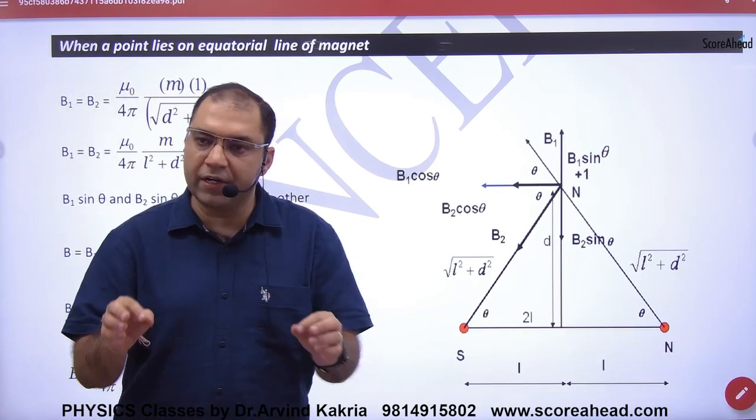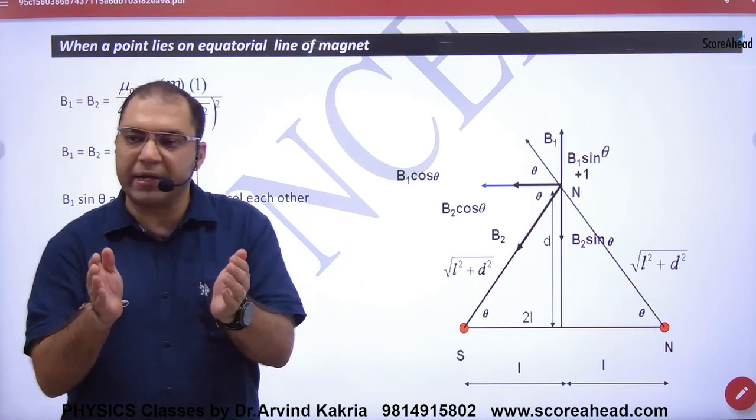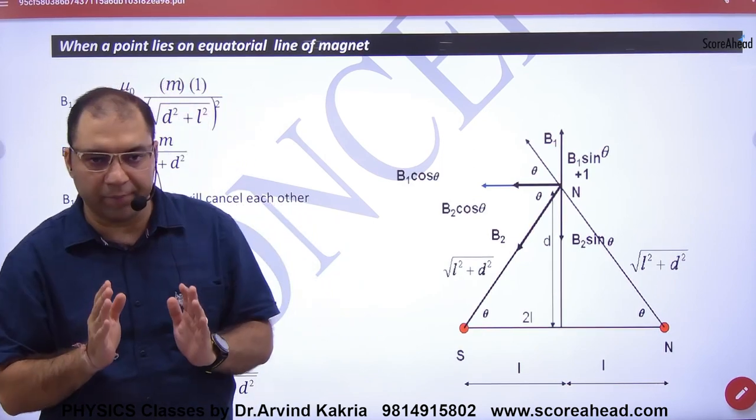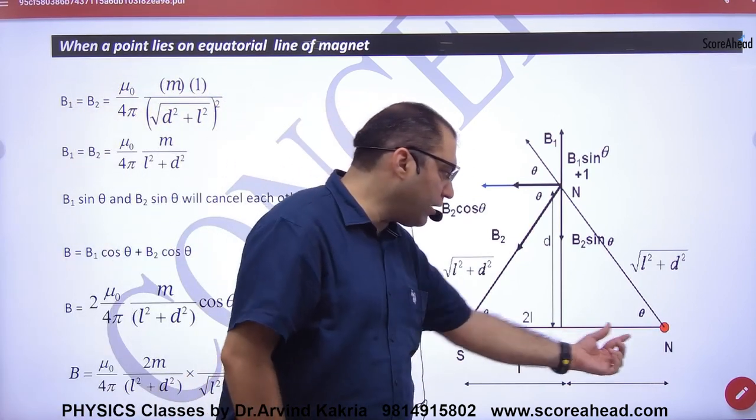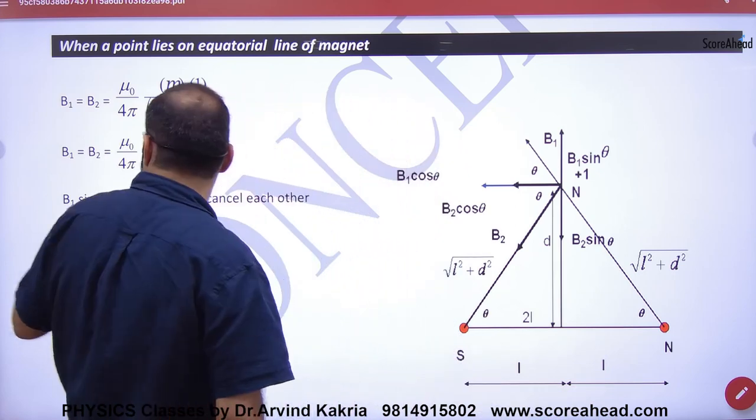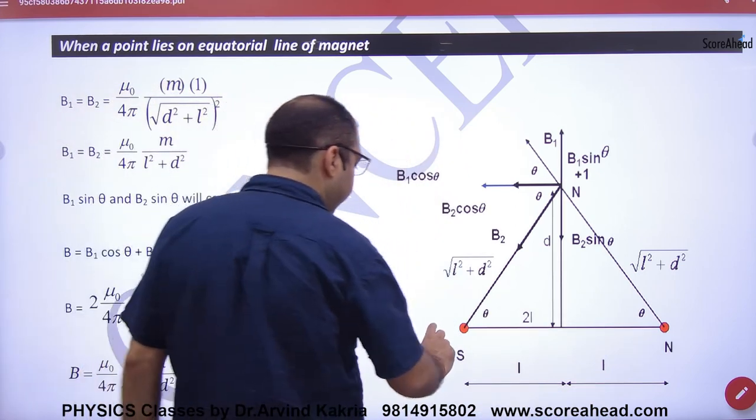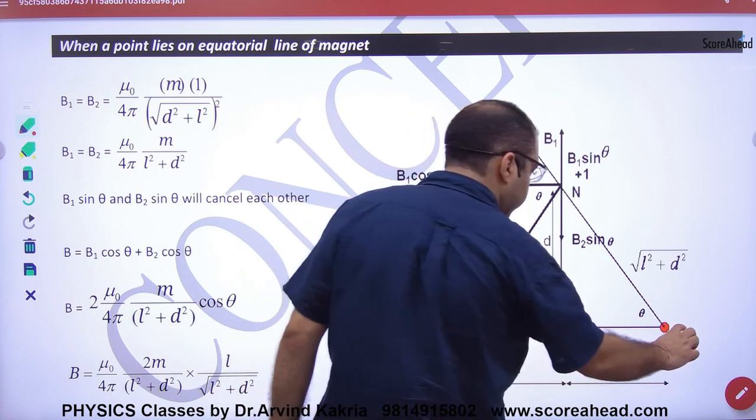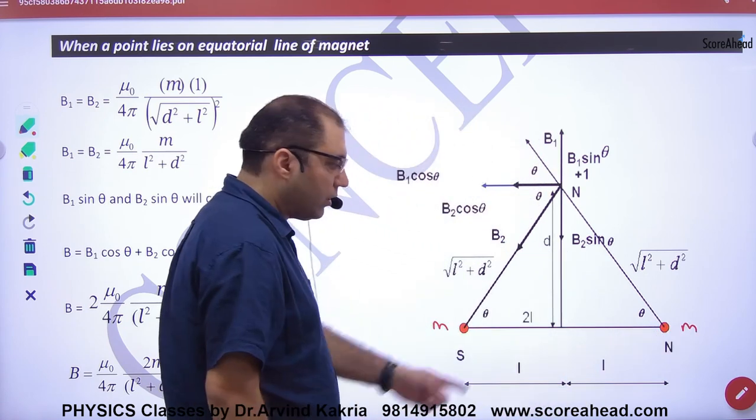We have to derive the magnetic field from any magnetic dipole on the equatorial line. What is the equatorial line? This is a dipole. The pole strength is small m, separated by 2L. This is the equatorial line.